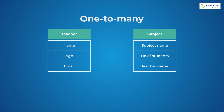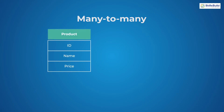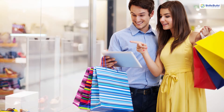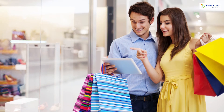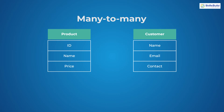Let's talk about many-to-many relationships. Let's say we have a products table with ID, name, and price, and a customer table with name, email, and phone number. In this scenario a customer can buy more than one product, and at the same time a product can be bought by more than one customer. This type of relation is known as many-to-many.